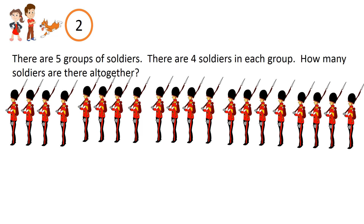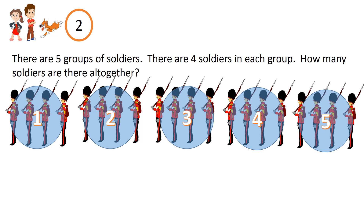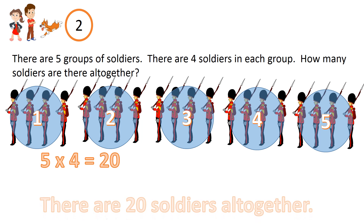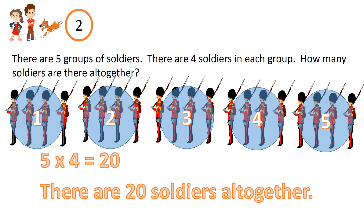Question 2. There are five groups of Soldiers. There are four Soldiers in each group. How many Soldiers are there all together? Five groups of four. Five times four equals twenty. There are twenty Soldiers all together.